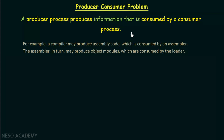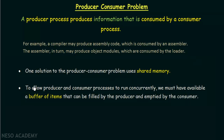The actual problem in the producer-consumer problem is that we need to make the producer and consumer work concurrently, so that the consumer will only consume what has been produced and will not try to consume what has not yet been produced. One solution to the producer-consumer problem uses shared memory.